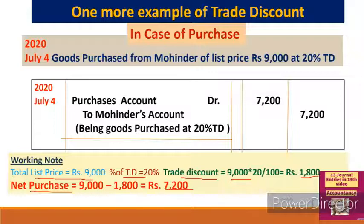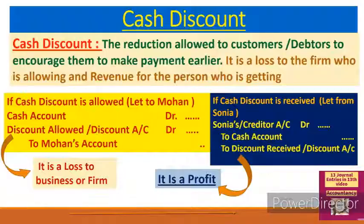For the journal entry: goods have been purchased from Mahinder — credit purchase is indicated because no 'cash' is written, meaning it is a credit transaction. Purchase account is debited because goods are coming into the business. Mahinder is the giver — his account is credited. Entry: Purchase account debit to Mahinder's account, net amount 7,200 — being goods purchased at 20% trade discount. This is how trade discount is handled for both sale and purchase journal entries.